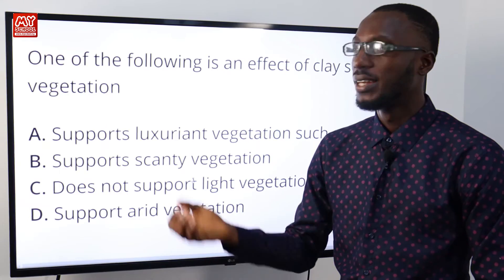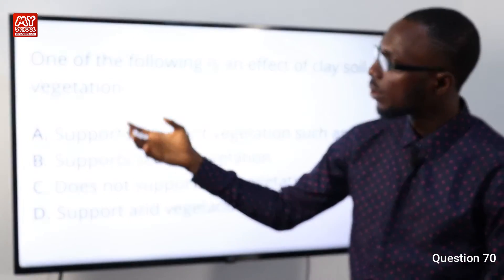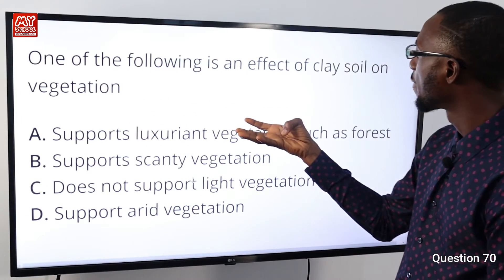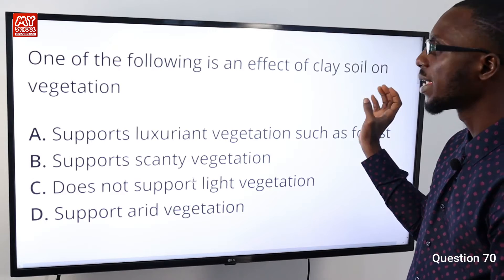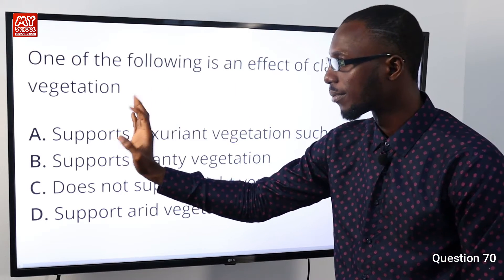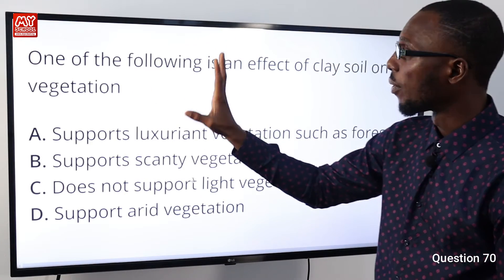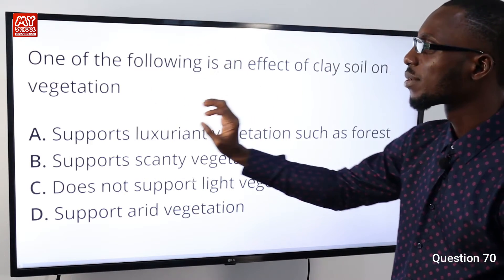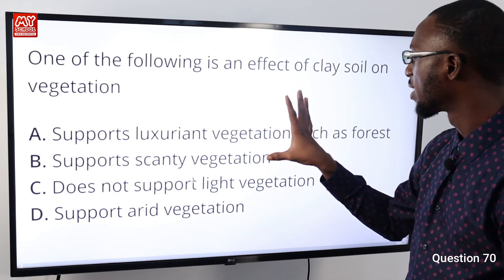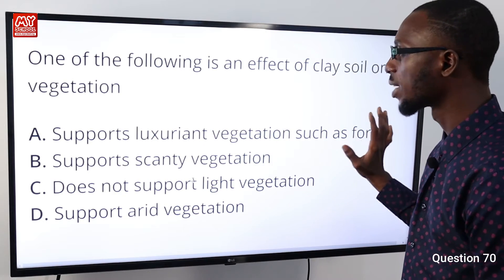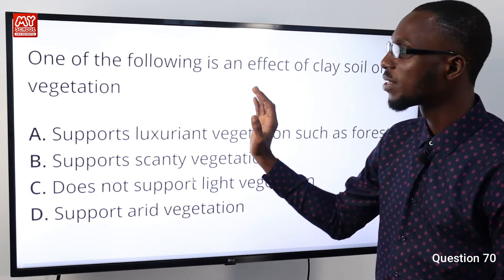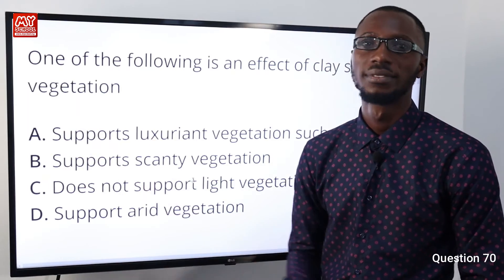Question 70: One of the following is an effect of clay soil on vegetation. Clay soil supports luxuriant vegetation such as forests. The correct option is A.